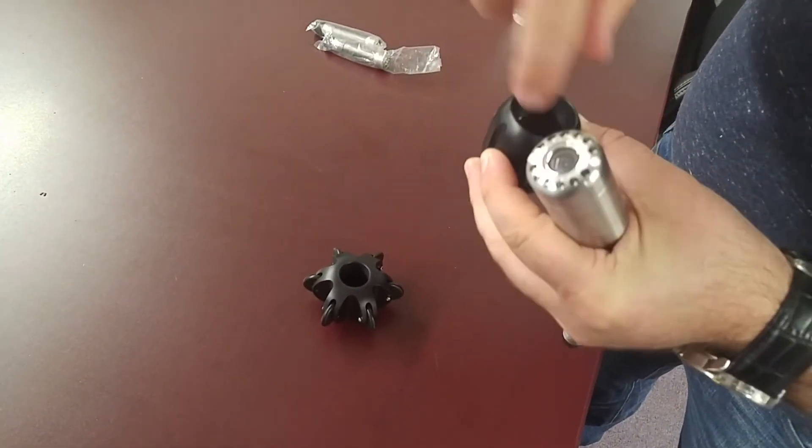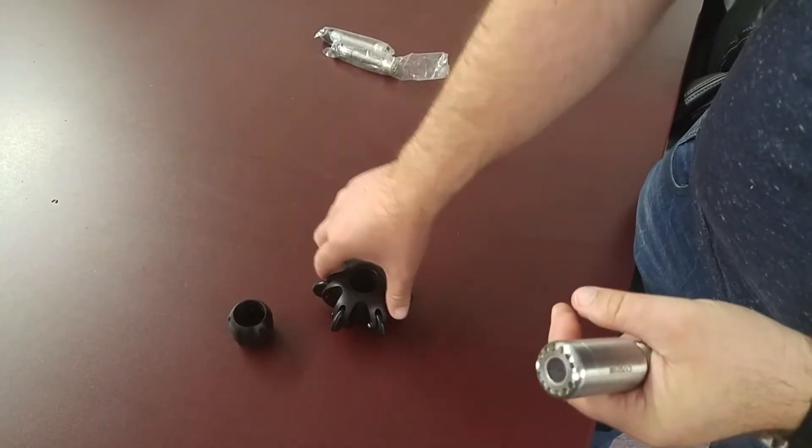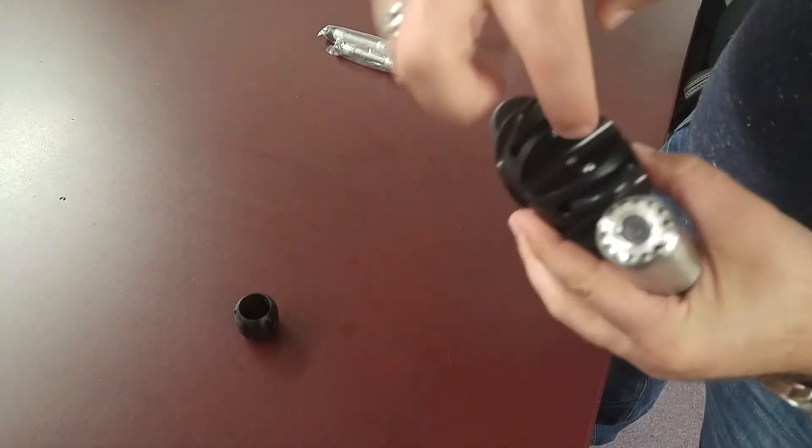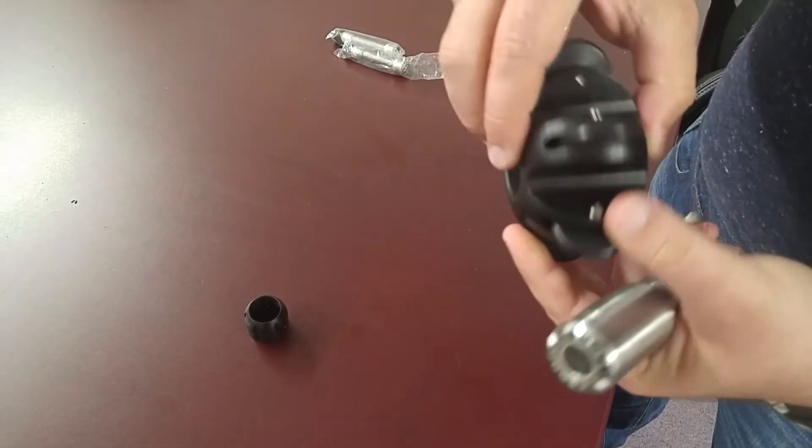You can see kind of inside that they do have little joints. Same thing for the big one. So the big one has two. There's one right here and then there's one over here.